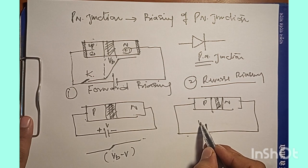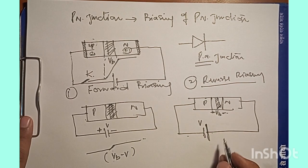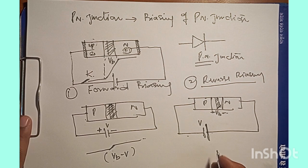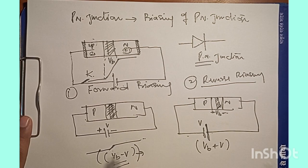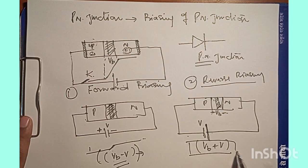If we apply external voltage V and the barrier potential is VB, then in reverse biasing the effective barrier potential will be VB plus V. Whereas in forward biasing, the effective barrier potential is VB minus V. This means in forward biasing the size of the potential barrier decreases, but in reverse biasing the size of the potential barrier increases.